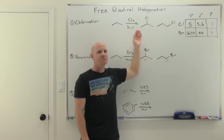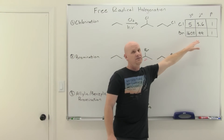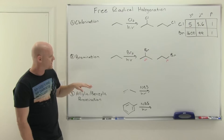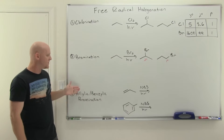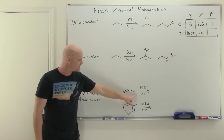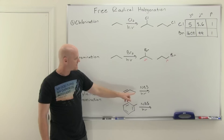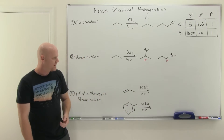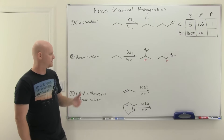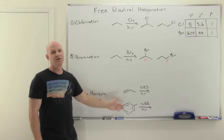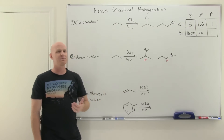We can predict relative ratios of products using a selectivity table. With chlorination, you are 5 times more likely to replace a tertiary hydrogen than a primary hydrogen, and 3.6 times more likely to replace a secondary hydrogen than a primary hydrogen. With bromination, you are 1,600 times more likely to replace a tertiary hydrogen than a primary hydrogen, and 99 times more likely to replace a secondary hydrogen than a primary hydrogen.